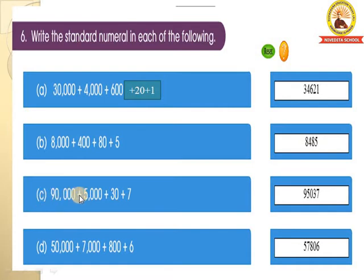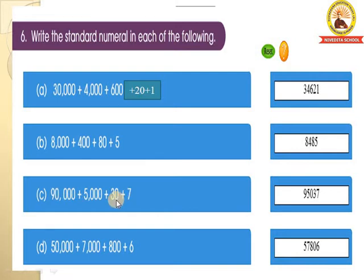Next, C: 90,000 plus 5,000 plus 30. Here the 100th place is missing children, isn't it? After 5,000 we should get the 100th place, but here it is missing. So when there is a missing place, you have to write 0 there. Then 30 means the 10th place is there, and the 1st place is missing too. So the standard form is 95,037.